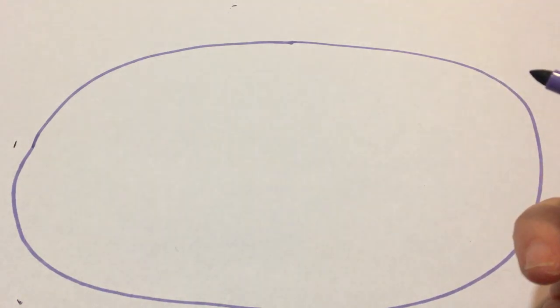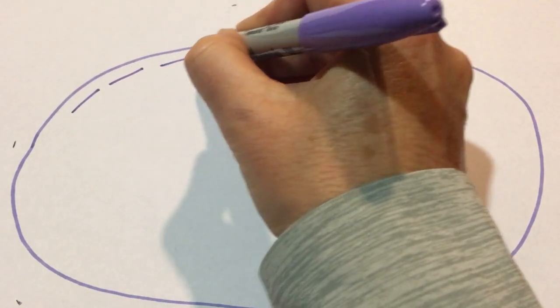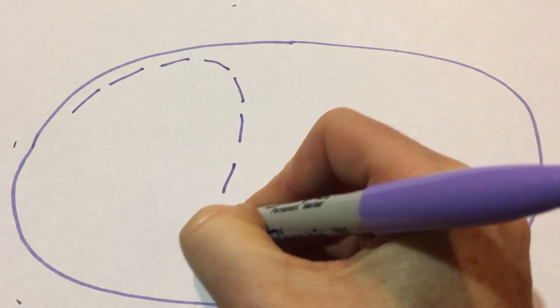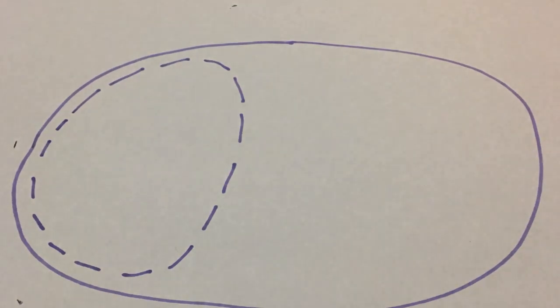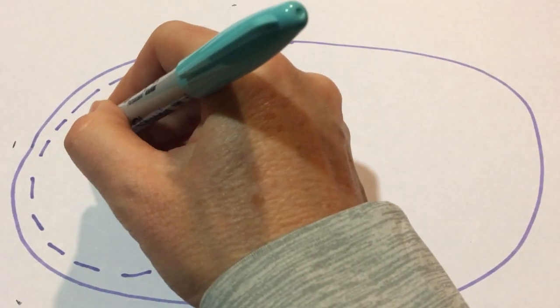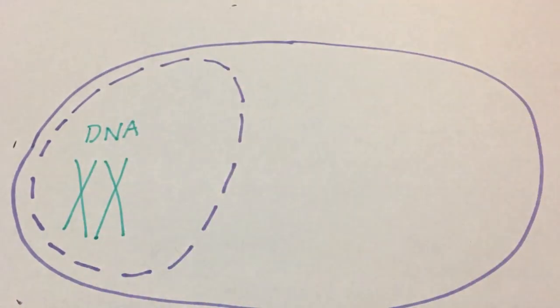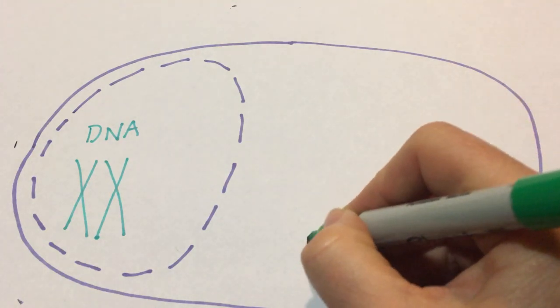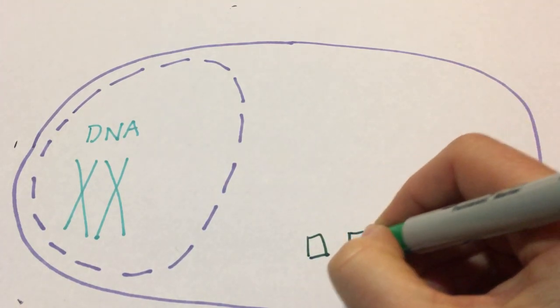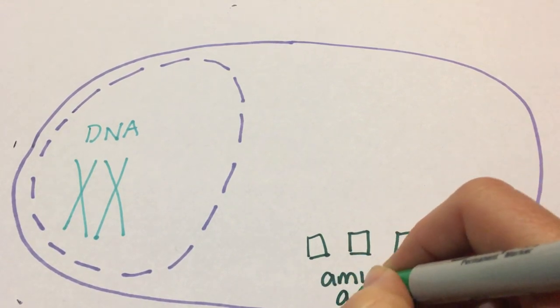In this video we're going to have a look at how we take the information from inside a eukaryotic cell's nucleus. That information is stored in the form of DNA as the chromosomes, and how that gets turned into polypeptides which are built from their building blocks, amino acids, which are found floating around in the cytoplasm.